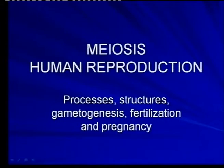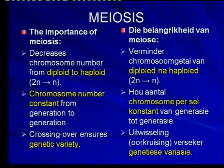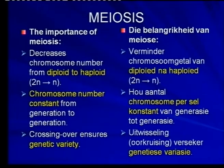Let's look at meiosis now and what meiosis means for us. It's important that you know why meiosis matters in the reproductive process. There are three main reasons why meiosis is a very important process. In the first instance, meiosis decreases the chromosome number from diploid to haploid — in other words, meiosis is responsible for the production of gametes, or sex cells, or reproductive cells.